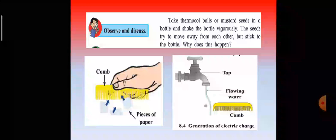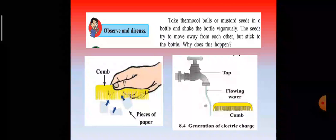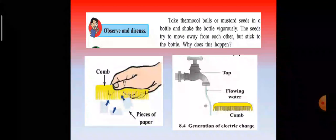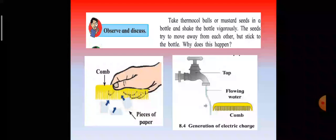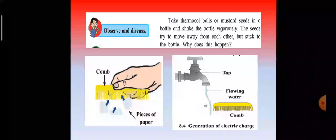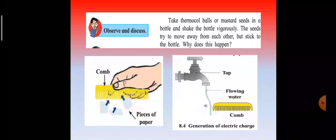In the next activity, you have to rub a plastic comb against paper. Touch this comb with another uncharged comb. Take the other comb near some pieces of paper and observe what happens. You see that the bits of paper are attracted towards the comb.